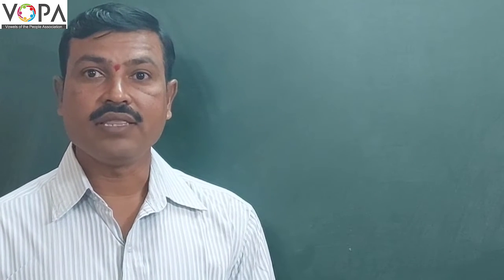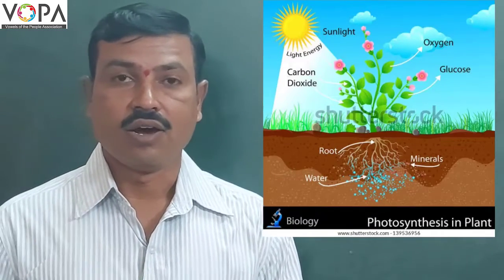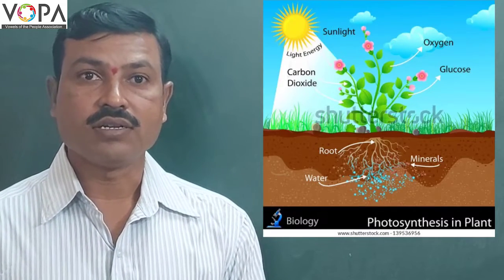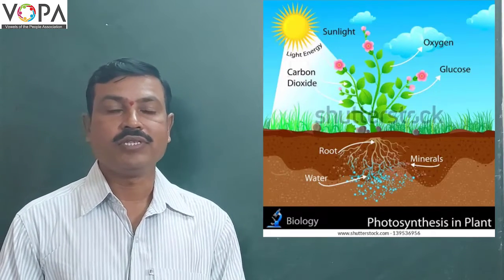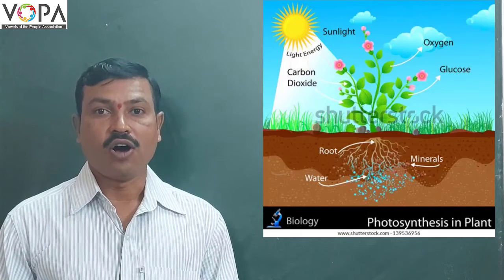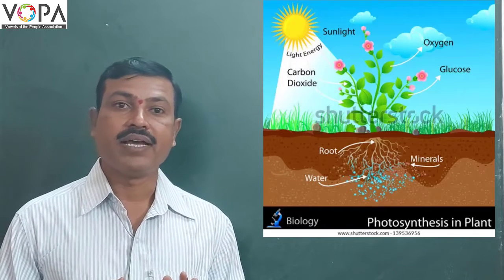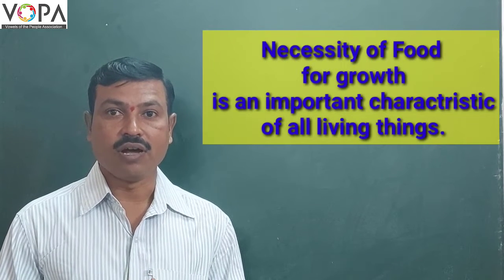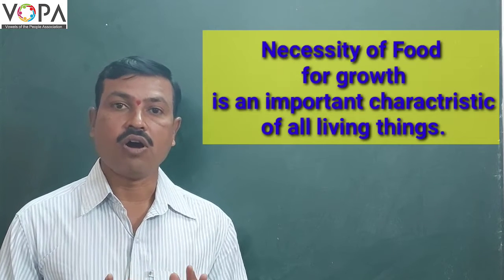Can you guess what plants eat or how they make their food? Let's watch the video. All plants prepare their food in sunlight using water and minerals from the earth, by the process of photosynthesis. All animals and some plants take ready-made food produced by plants. In this way, the necessity of food for growth is a really important characteristic of all living things.